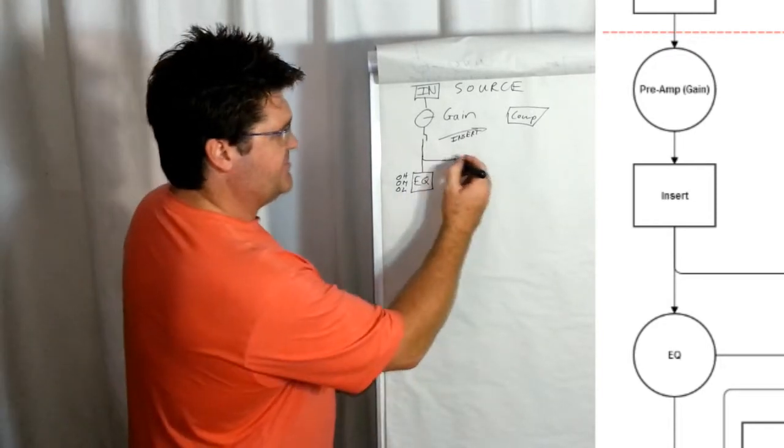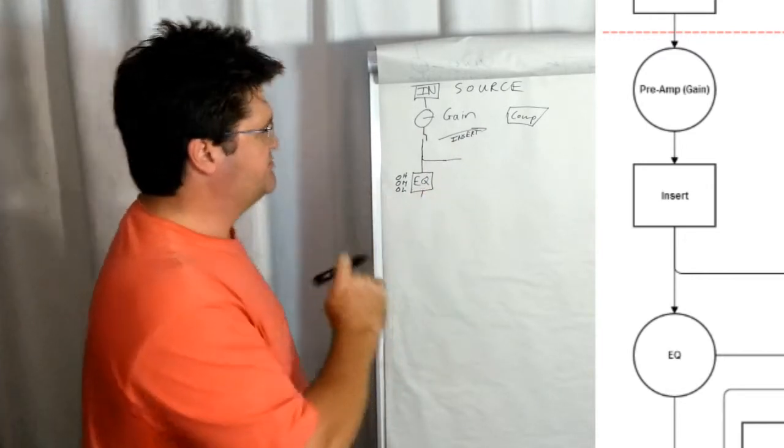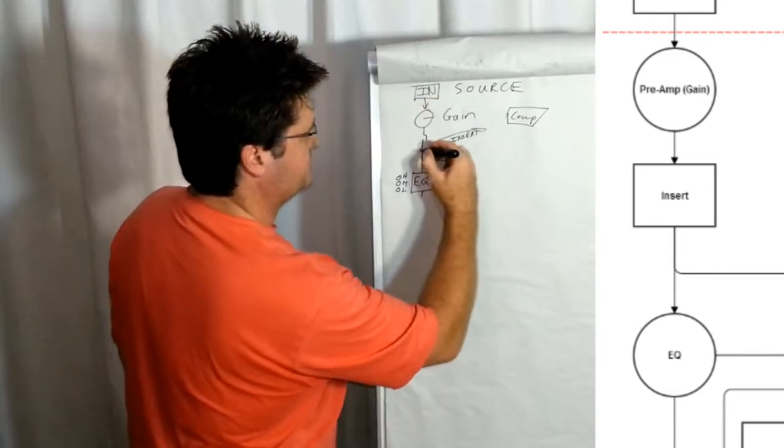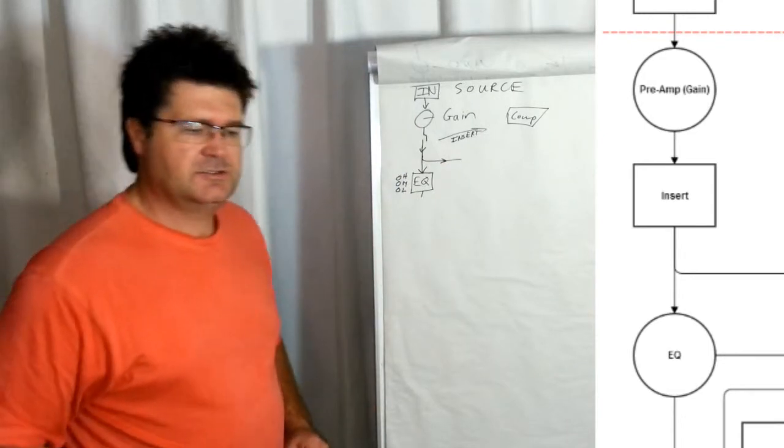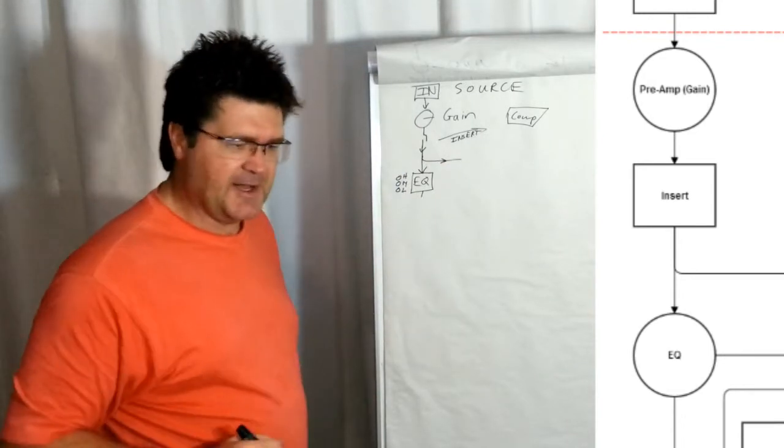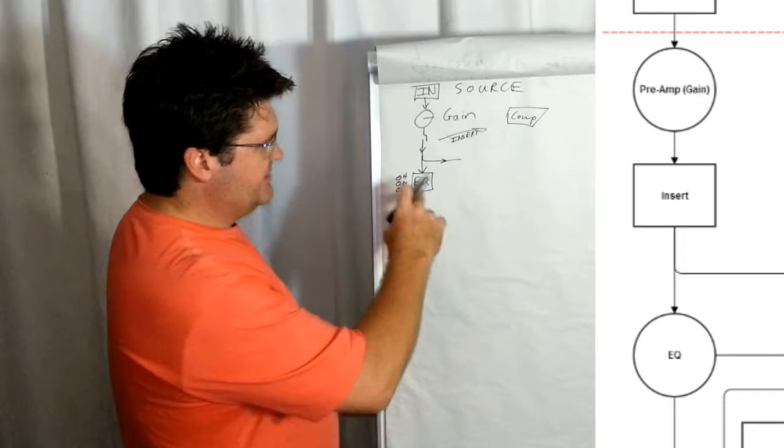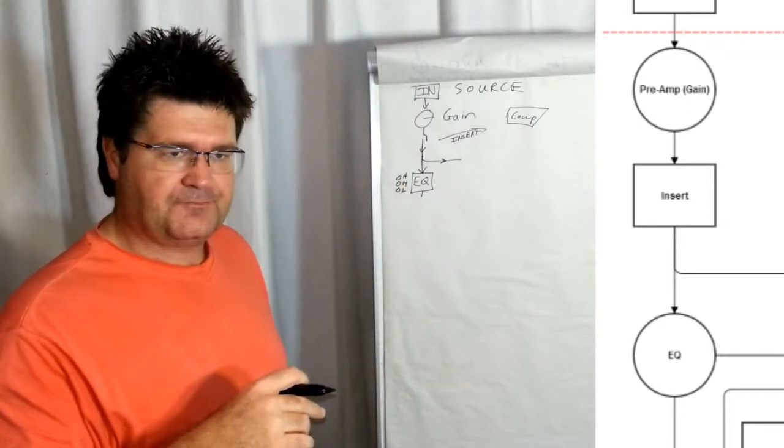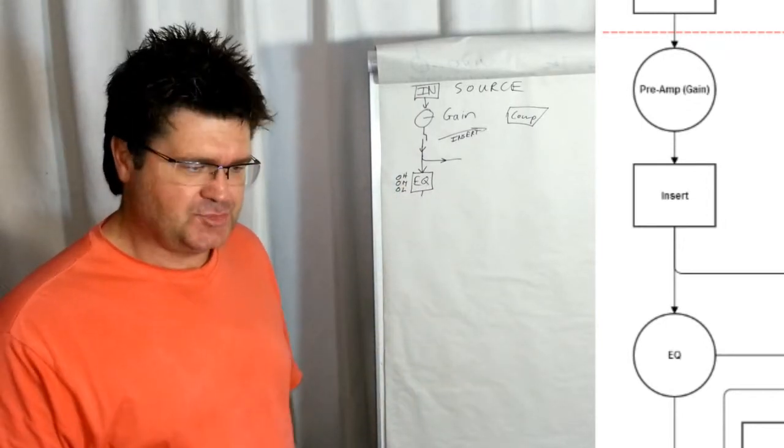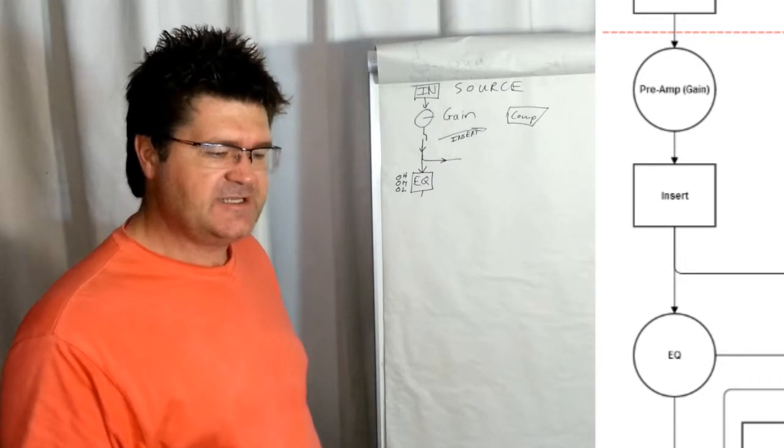It splits off here to EQ. Now, let's pause a second. The on-screen diagram looks a lot better than mine, I do realize. At this point, it splits to, or can split, to the auxiliary sends.